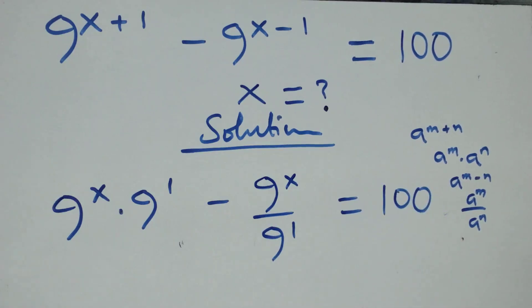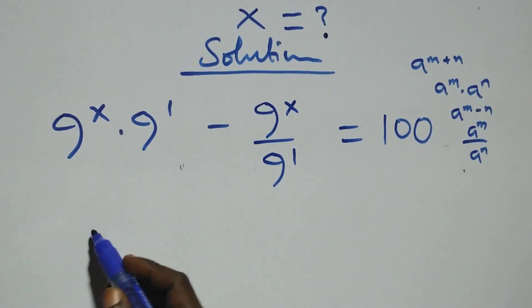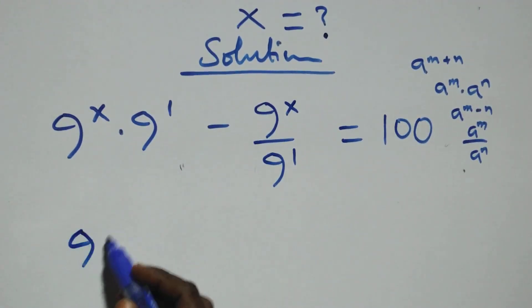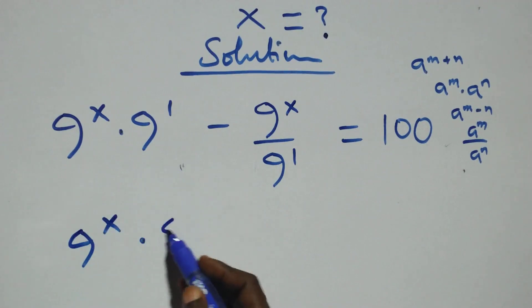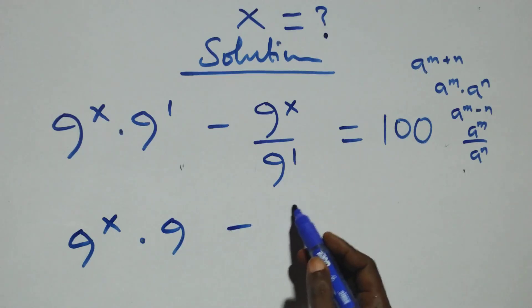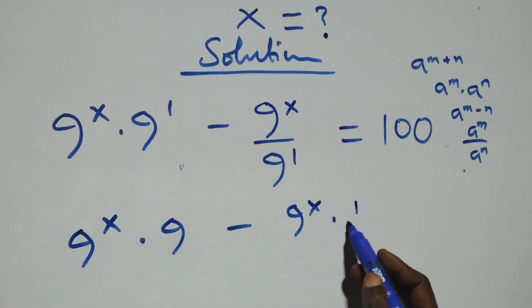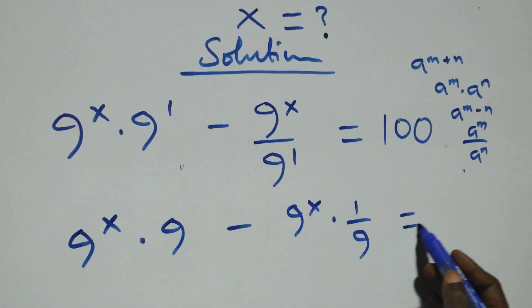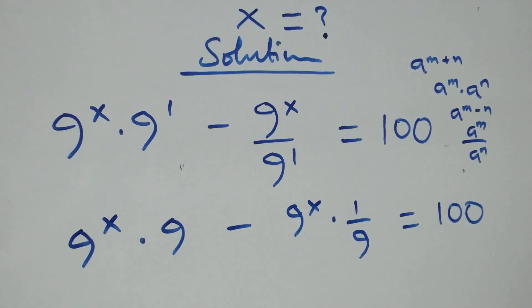At this here we have 9 raised to power x over 9 raised to power 1, then equals to 100 on this side. The next step here, this is the same thing as 9 raised to power x times 9 raised to power 1 minus. We can write this as 9 raised to power x times 1 over 9, then equals to 100 on this side.